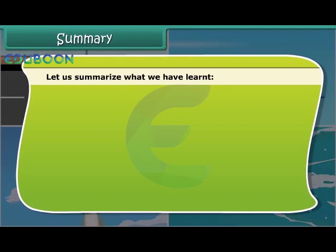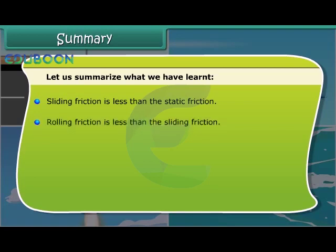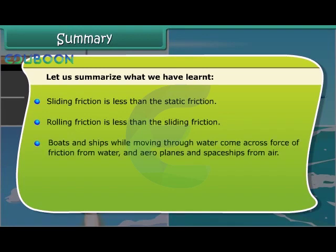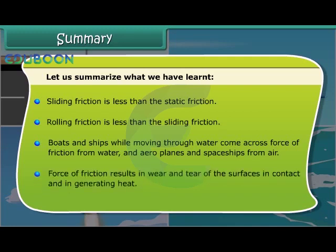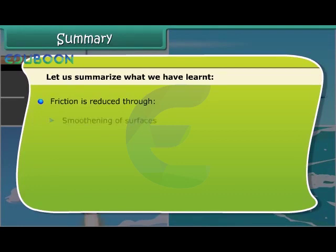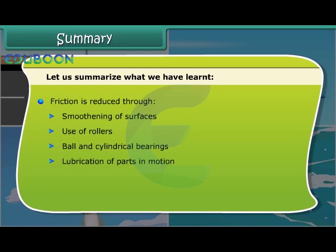Let us summarize what we have learnt. Sliding friction is less than static friction, and rolling friction is less than sliding friction. Boats and ships moving through water come across friction from water, while aeroplanes and spaceships face friction from air. Force of friction results in wear and tear of surfaces in contact and in generating heat. Friction is reduced through smoothening of surfaces, use of rollers, ball and cylindrical bearings, lubrication of parts in motion, and streamlined shape of vehicles.